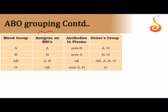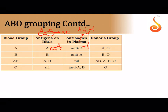ABO blood grouping is based on the type of antigen present on your RBC surface - these are glycoproteins or sugars. The plasma contains Y-shaped antibodies. Blood group depends on what type of antigen is on the RBC and what type of antibody is in the plasma. A person with blood group A has antigen A on their RBC and antibody B in their plasma.